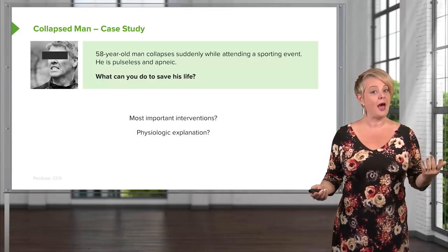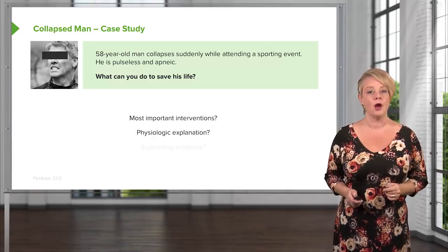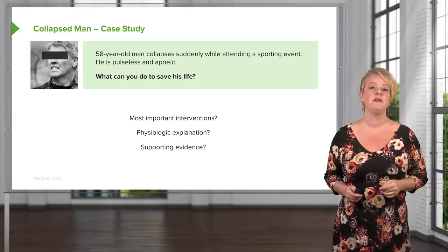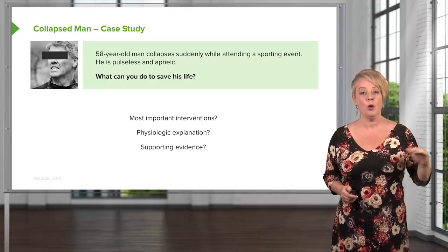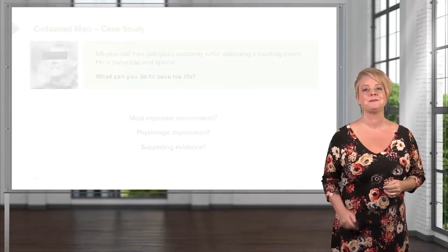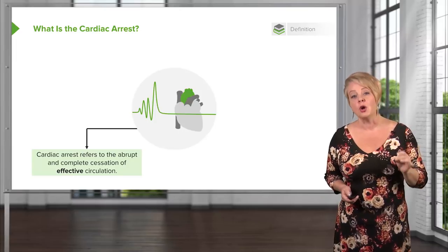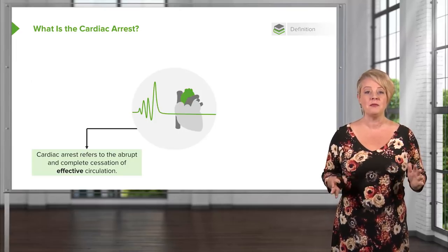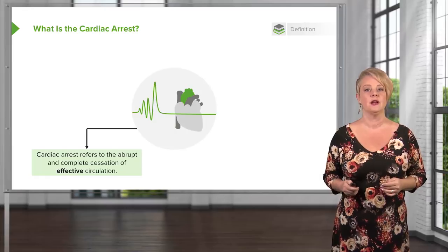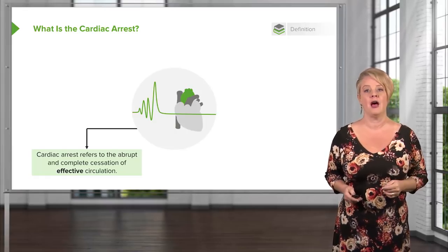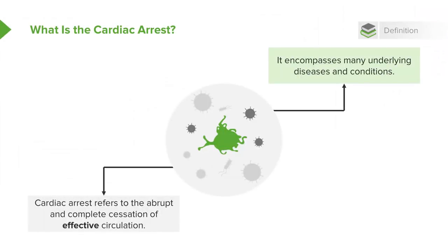We're going to talk about why this happened physiologically, what might be going on with him, and the supporting evidence that helps us know what the most effective interventions are. So what is cardiac arrest? The term cardiac arrest refers to the abrupt cessation of effective circulation — basically, it means the heart is stopped. It encompasses many different underlying diseases and conditions, but the final common pathway in each case is that the heart is not producing effective circulation of blood to the body.